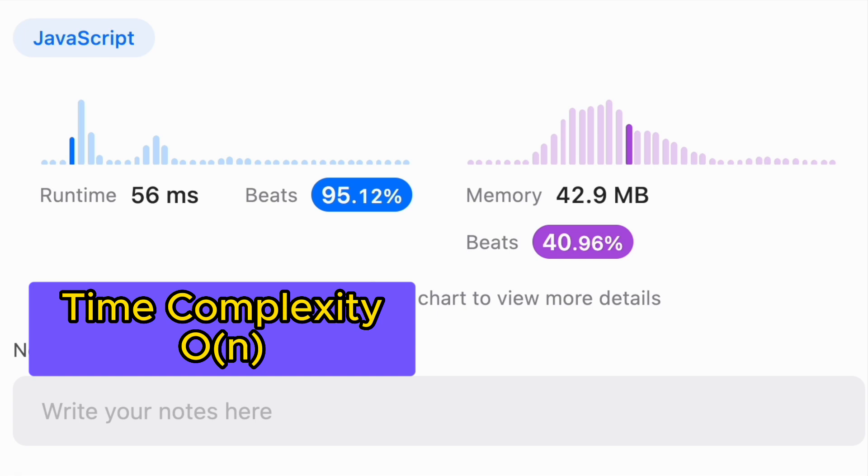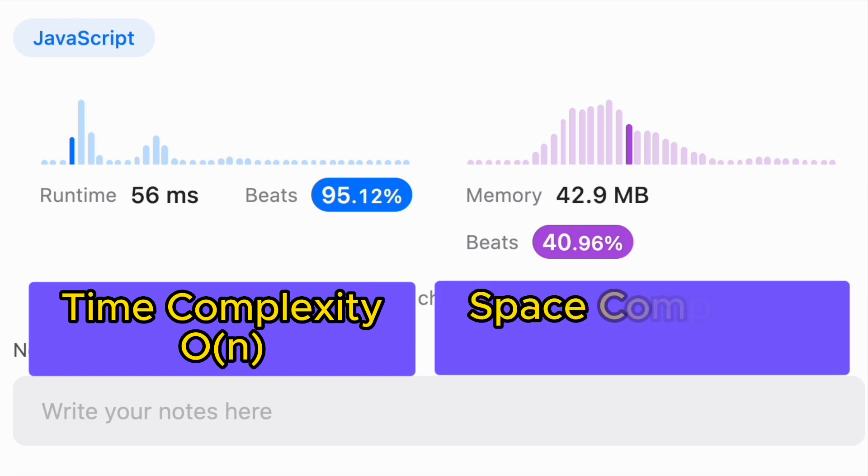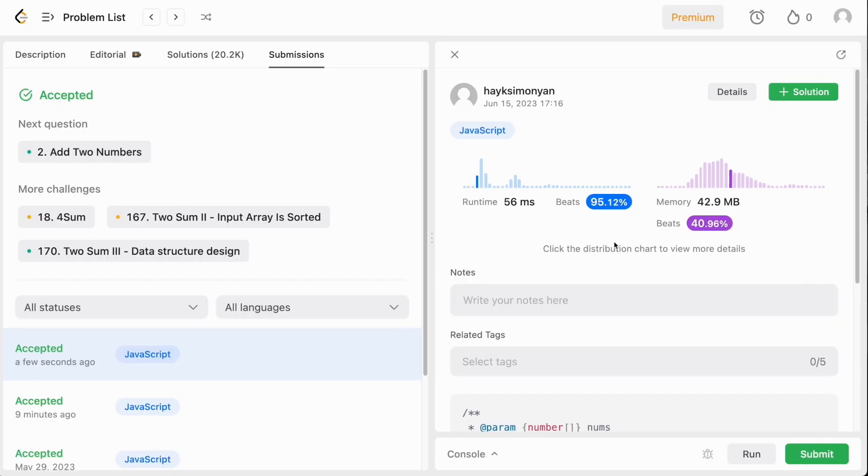It is more efficient than the brute force approach for large datasets. But for space complexity, this one is O(n) in the worst case scenario where we store all the elements of the array in the hashmap. Hope you found this video helpful. Thanks for watching and see you next time.